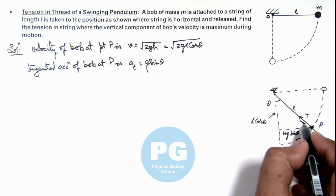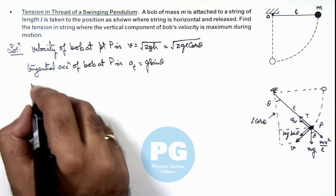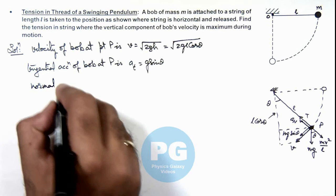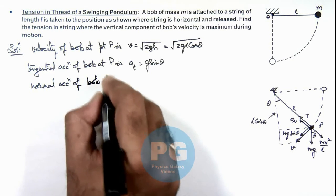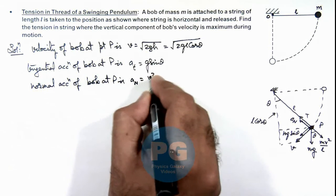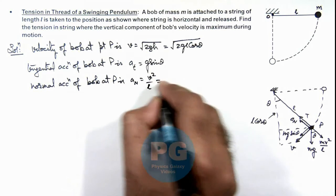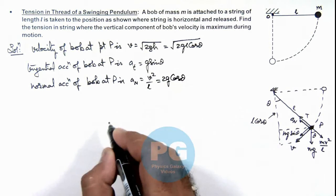It will also be experiencing a normal acceleration, which can be given as normal acceleration of bob at P = v²/l, which can be written as 2g cos θ. As this angle is theta from vertical, this is also an angle theta.